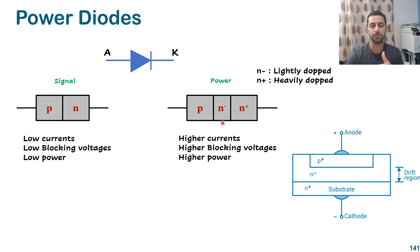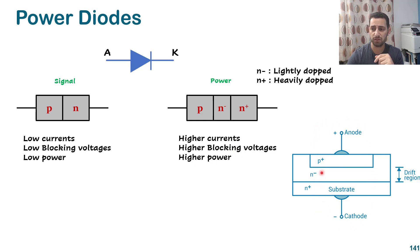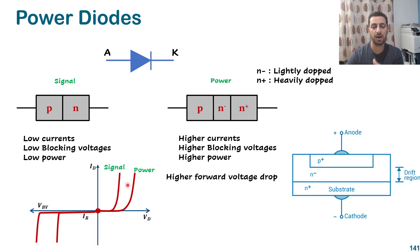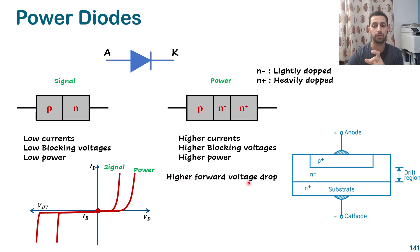The structure is adapted and manipulated to handle higher currents, higher blocking voltages, and higher power. This is another representation of the power diode structure with p-plus and two n regions — n-minus and n-plus. The IV curve for the signal diode and power diode will look different: the power diode has that extra region which allows it to block higher voltage, but it also brings some other characteristics like higher forward voltage drop.